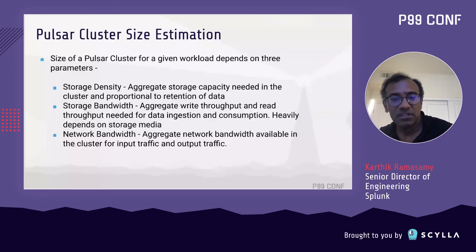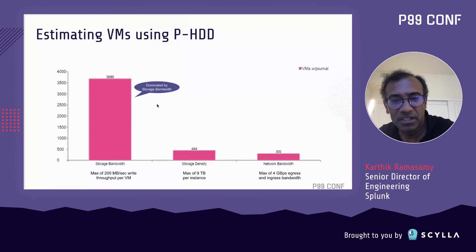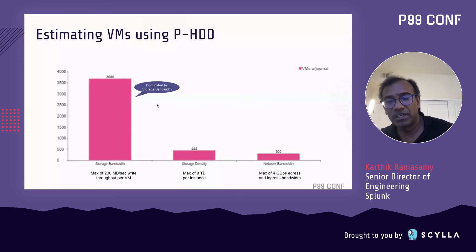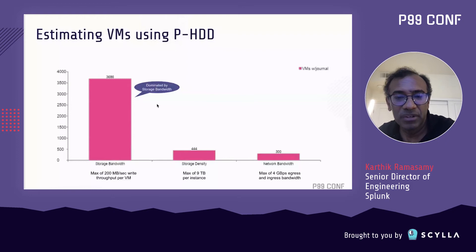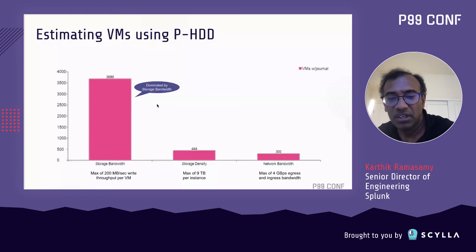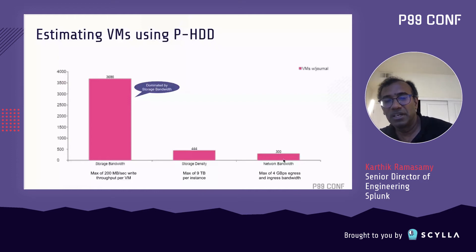Estimating with PHDDs: they give a maximum observed write throughput of 200 MB/s per VM in Pulsar performance testing, and a storage density maximum of nine terabytes per instance. For storage bandwidth throughput, you need 3,686 VMs to handle 10 petabytes per day with journal. Storage density alone requires 444 nodes, and network bandwidth alone requires 300 nodes. So the PHDD solution requires 3,686 VMs — dominated by storage bandwidth.